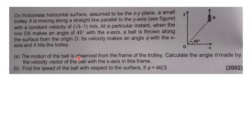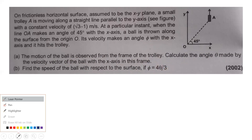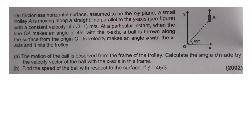First question: the motion of the ball is observed from the frame of the trolley. Calculate the angle theta made by the velocity vector of the ball with the X-axis in this frame. Second, find the speed of the ball with respect to the surface if pi is equal to 4 theta by 3. For the trolley frame, the trolley is at rest in the frame.